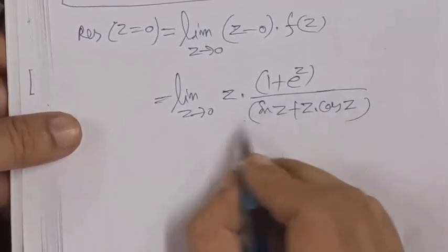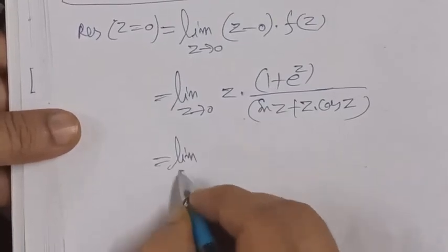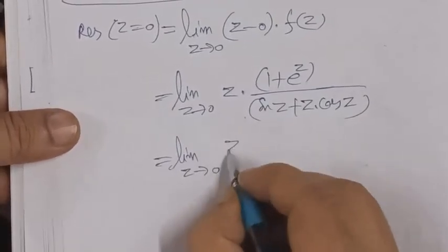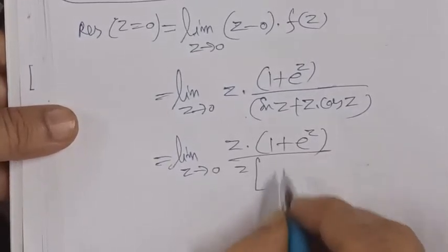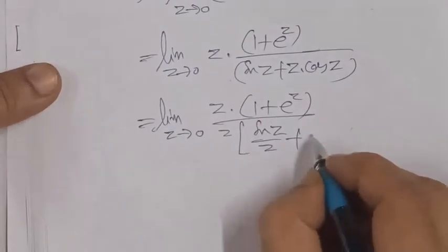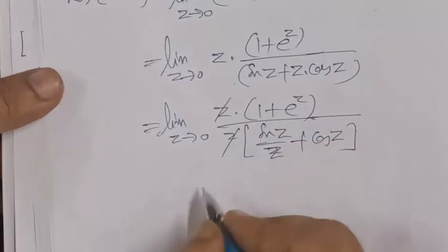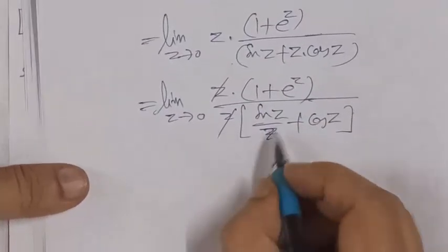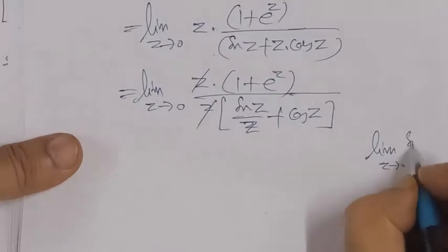From the denominator, we'll factor out z. The first term sin z doesn't have z factored, so it goes to the numerator as z/sin z. From the second term z cos z, we factor z, leaving cos z. We cancel z and observe that limit z tends to 0 of sin z / z.